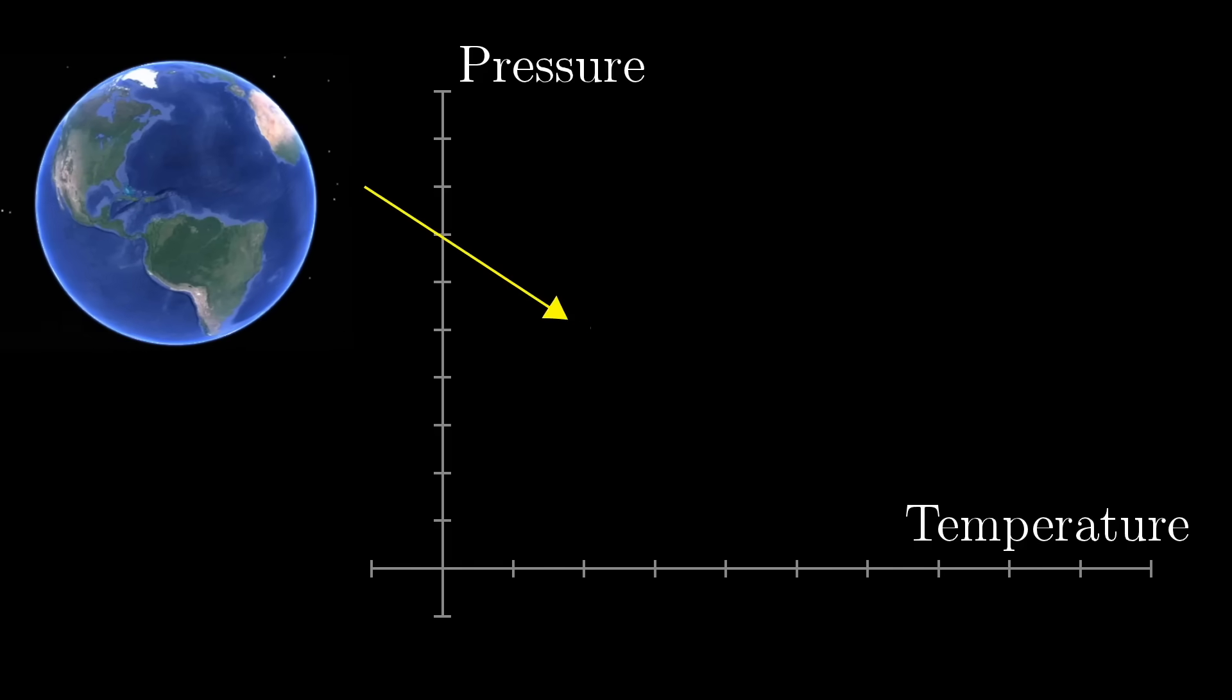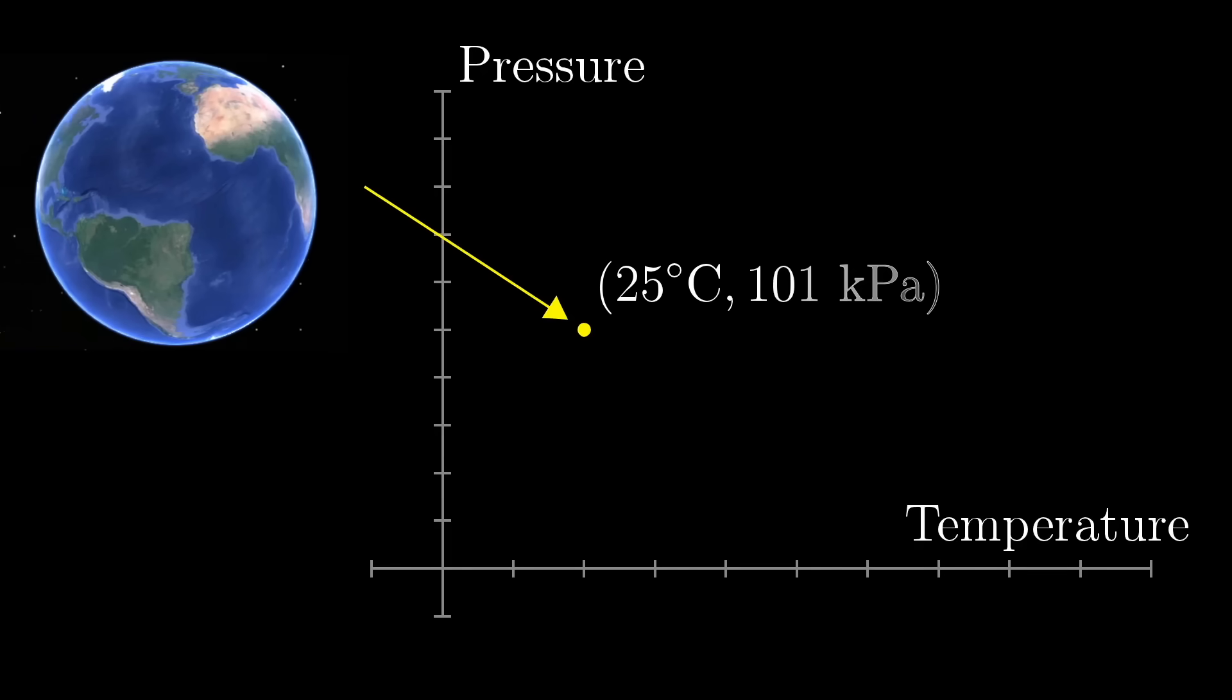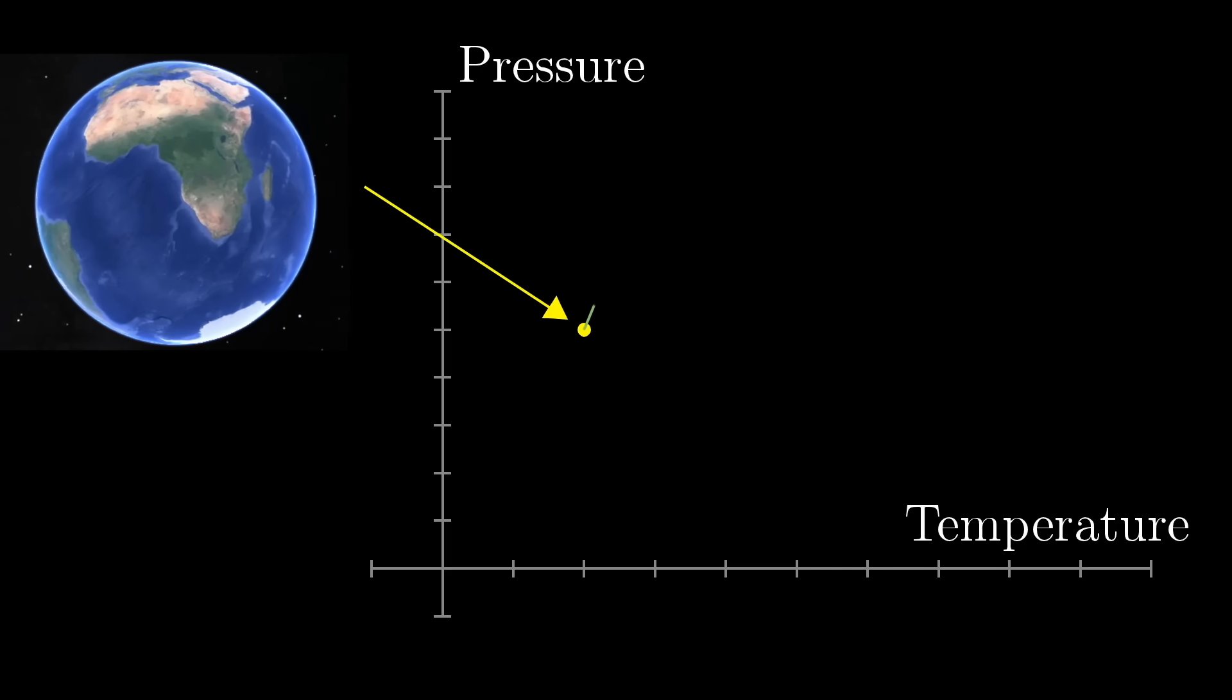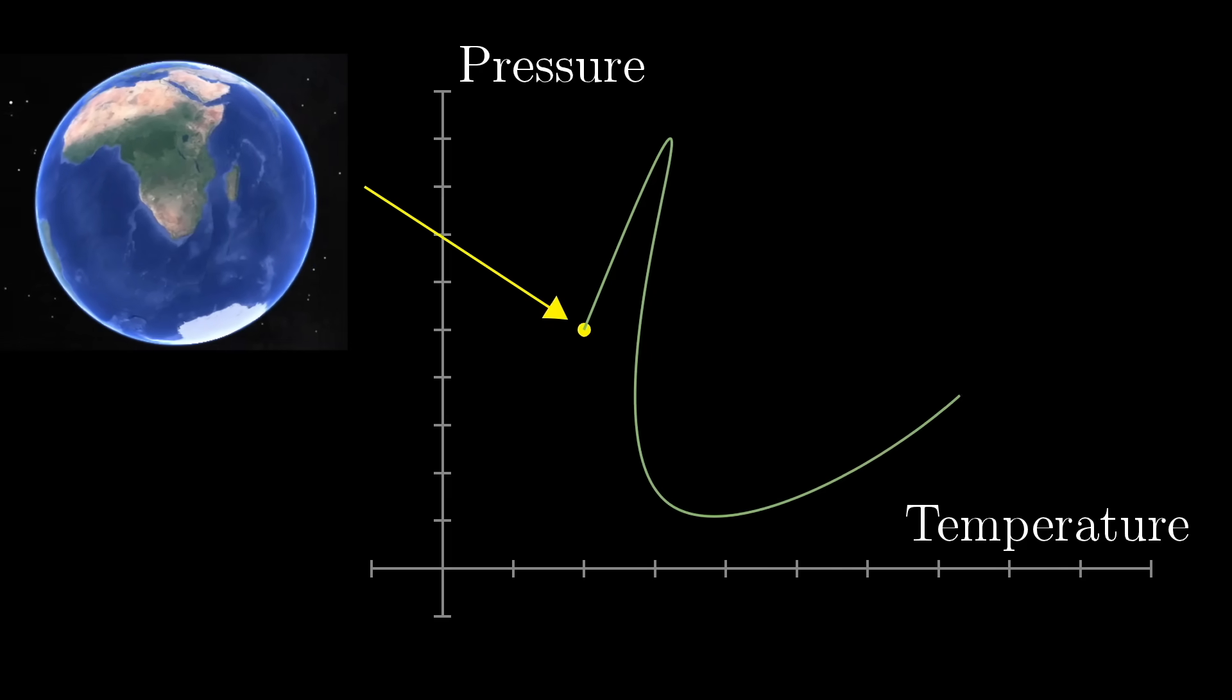This is because associating each point on the surface of the Earth with a pair of numbers, temperature and pressure, is the same thing as mapping the surface of the Earth onto a 2D coordinate plane, where the first coordinate represents temperature, and the second represents pressure. The implicit assumption here is that temperature and pressure each vary continuously as you walk around the Earth.